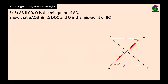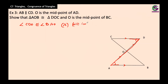Using the Z-shape, the angles formed at the turning points are equal, which means angle CDO is congruent to angle BAO. So we get one pair of equal angles because they are alternate interior angles.